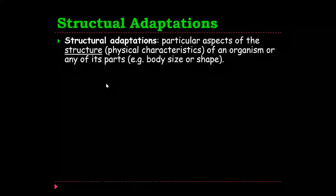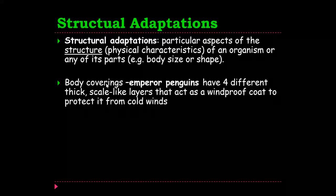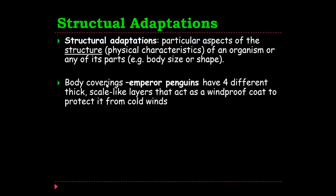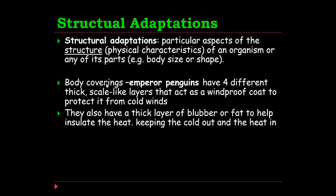Structural adaptations refer to particular aspects of the physical structure on the body of an organism — the body size, the shape, whether it has horns, how long its legs are, how long its neck is if it's a giraffe. These are elements of its structure which have adapted in order to make something easier in terms of surviving and thriving. For example, emperor penguins have four different thick, scale-like layers that act as a windproof coat to protect them from the cold wind — incredibly important when you live in Antarctica. They also have a thick layer of blubber or fat, which acts as insulation, keeping the heat in and the cold out.